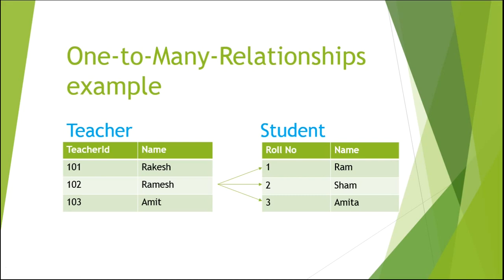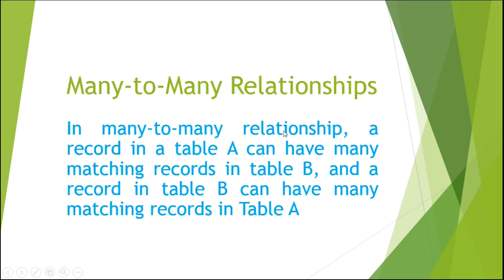Rule number one has one matching record with Ramesh, teacher ID 102. Rule number two has one matching record with Ramesh, teacher ID 102. And rule number three has one matching record with Ramesh, teacher ID 102. So we can say that the teacher table and the student table have a one to many relationship.